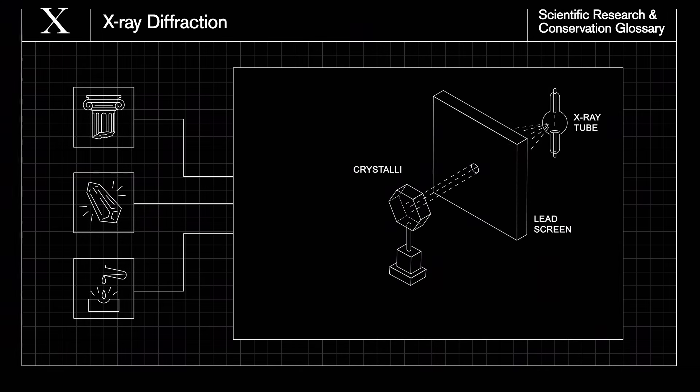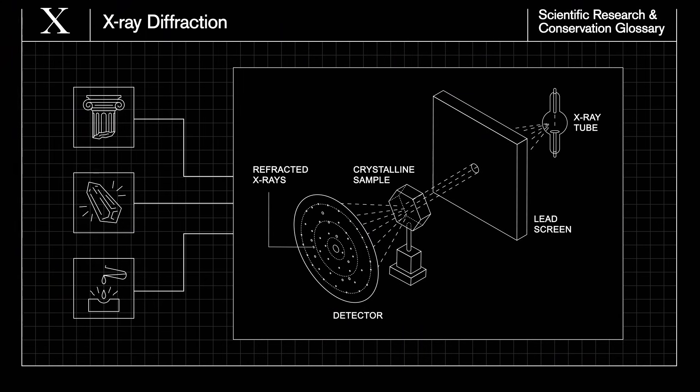X-rays are fired into an extremely small sample, bounce inside it, then reflect out and are analyzed. The speed and angle at which X-rays are bounced back, or refracted, helps to tell us the object's composition.